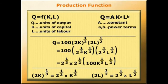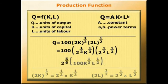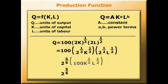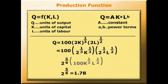The term in the brackets is the original level of Q. So the new level of Q is the original Q multiplied by 2 to the 5 sixths. Now, 2 to the power 5 over 6 is 1.78. When inputs double, output increases by 1.78 times — that is less than double. So doubling the inputs less than doubles the outputs. We have decreasing returns to scale.